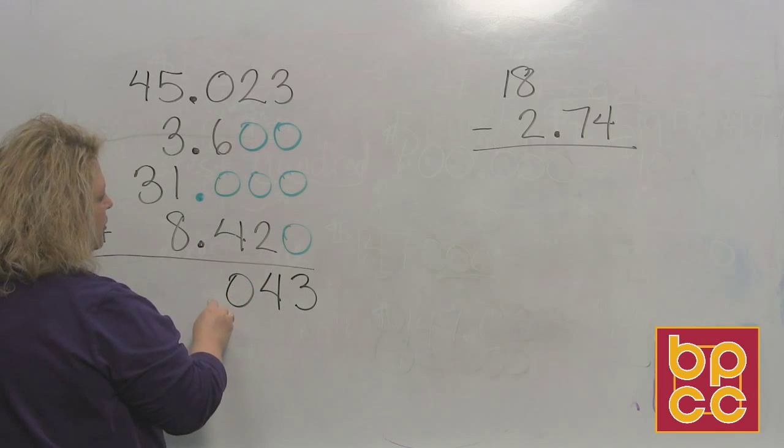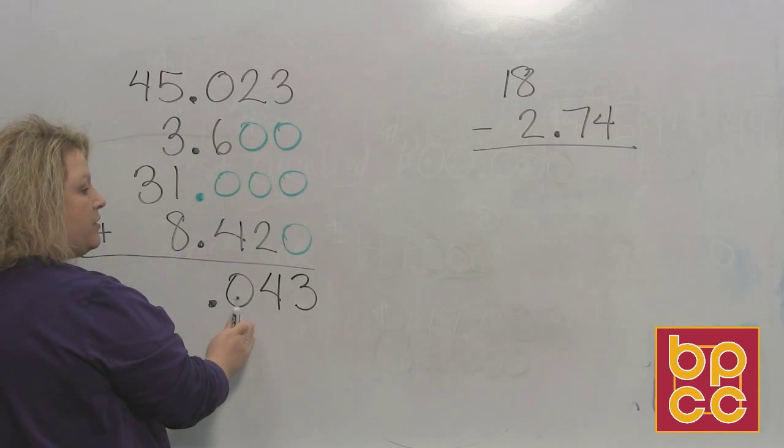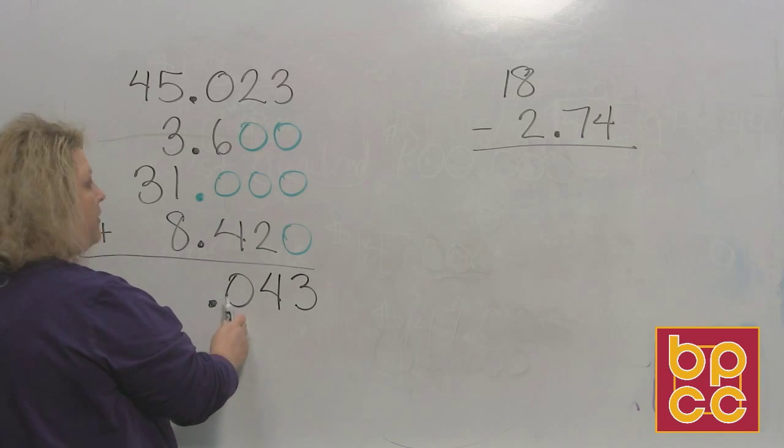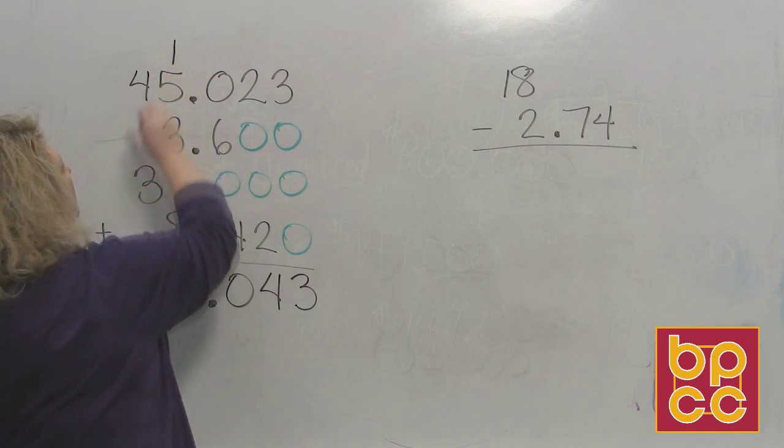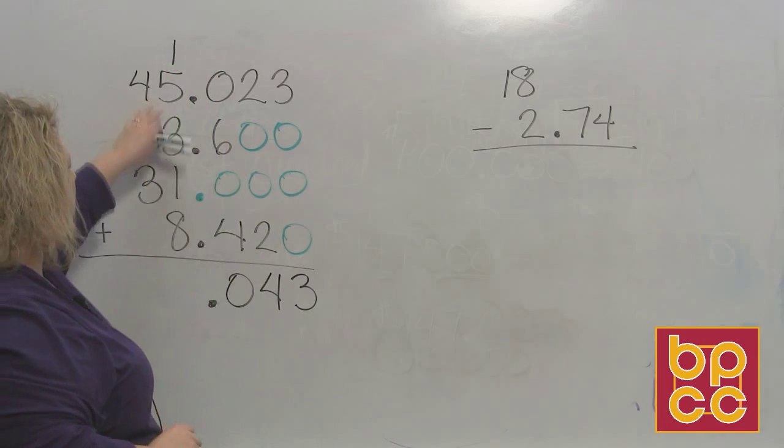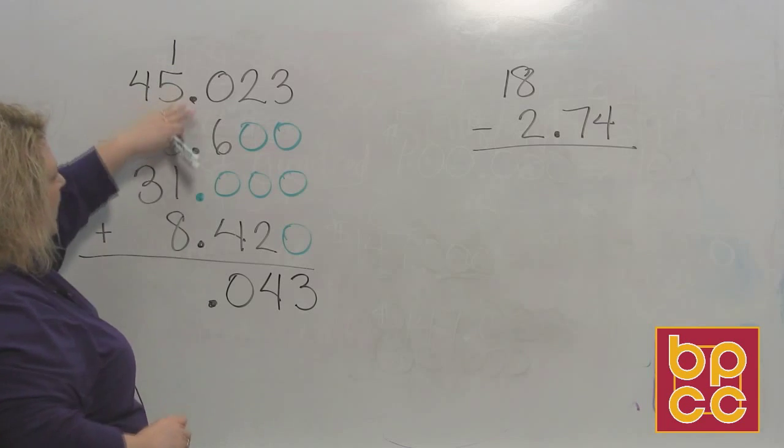And remember, when you have this, you can only put one digit here. So the zero, the ones place would go here and you carry the other one up there. So that's ten. And then I go put my decimal.